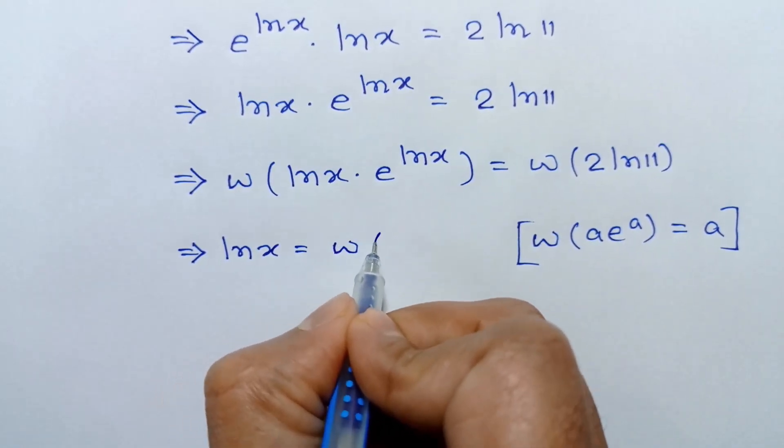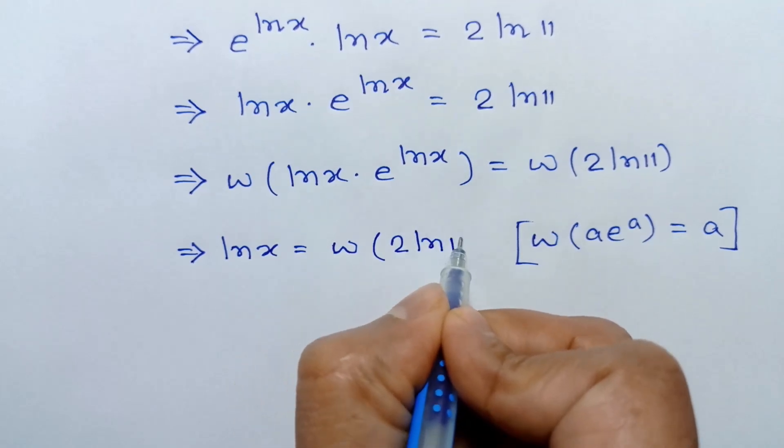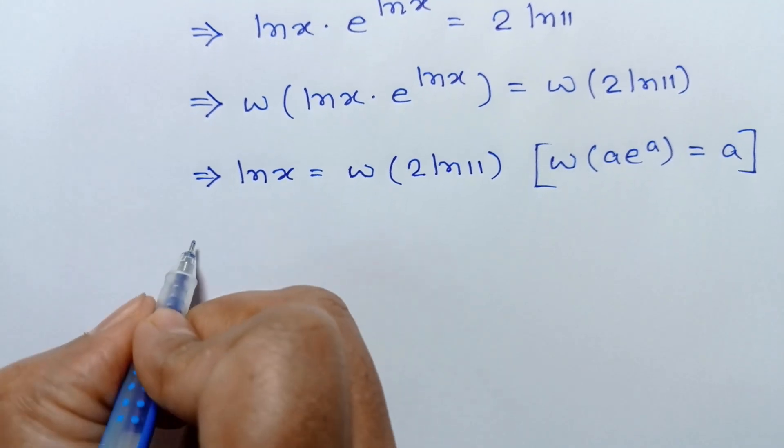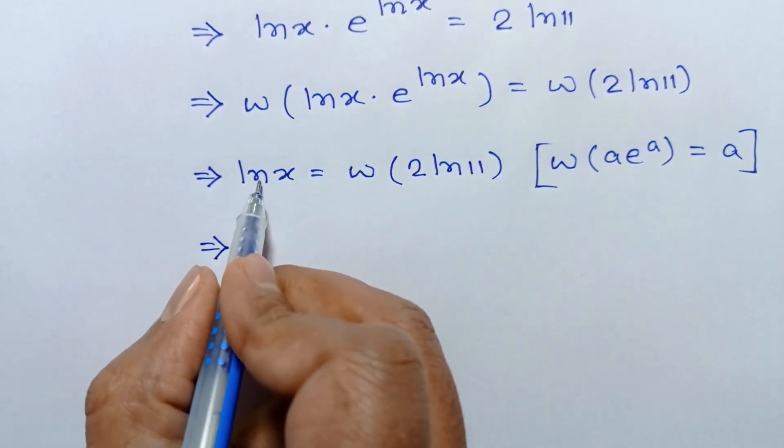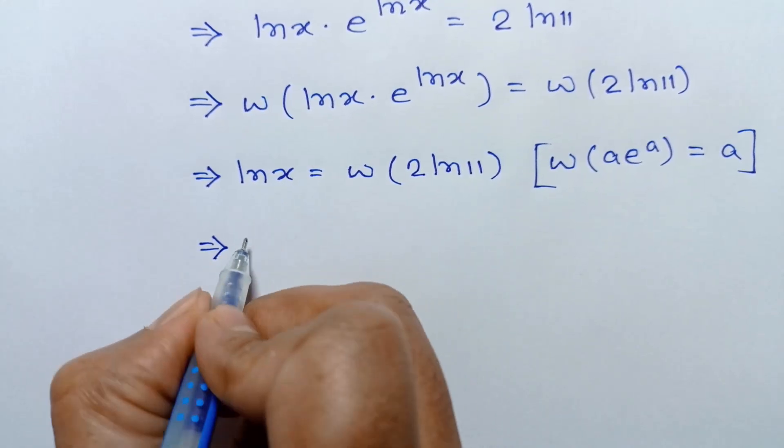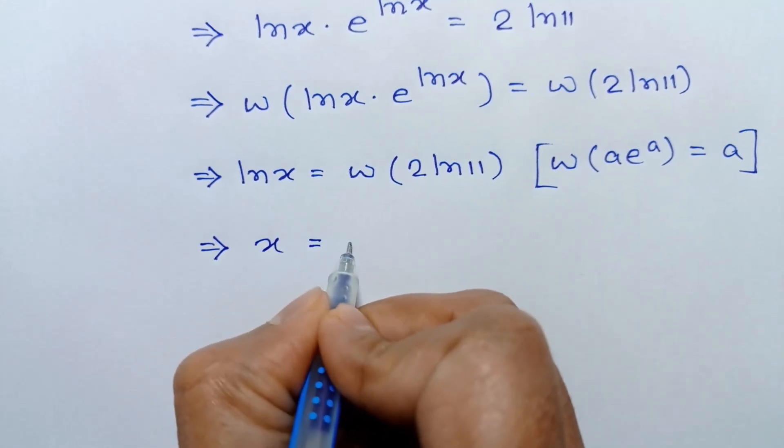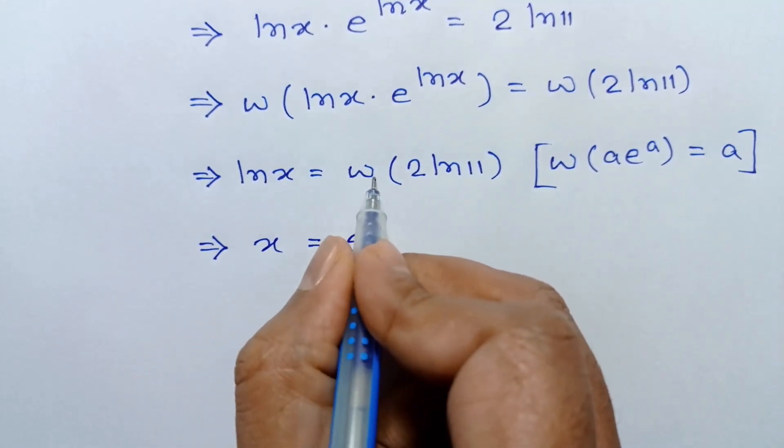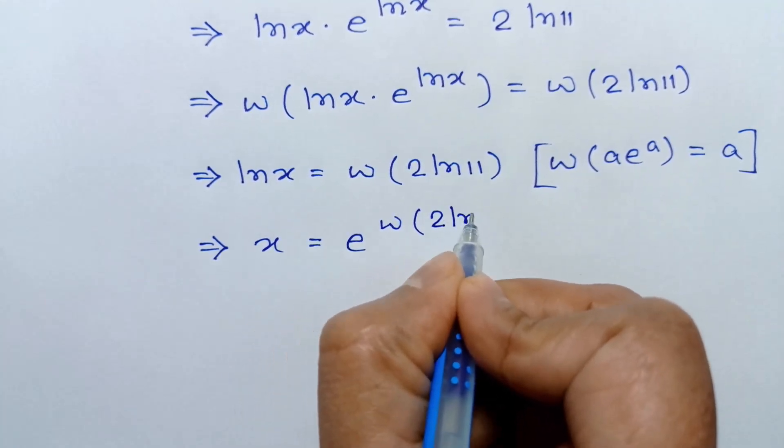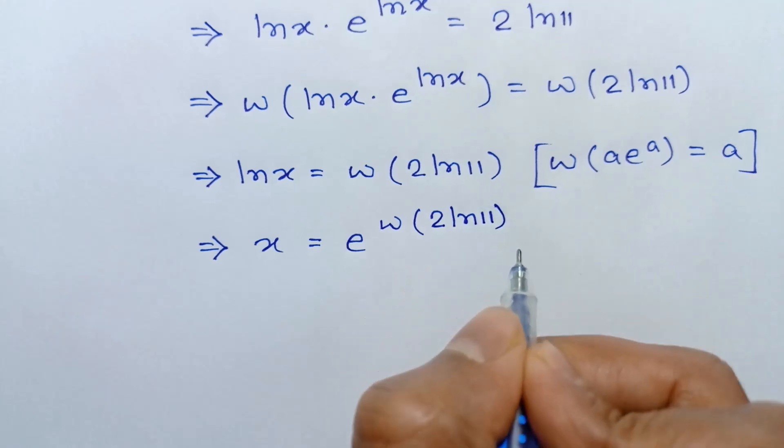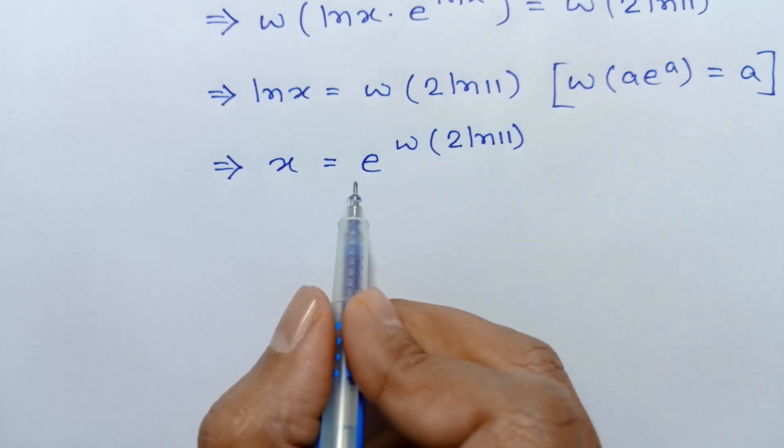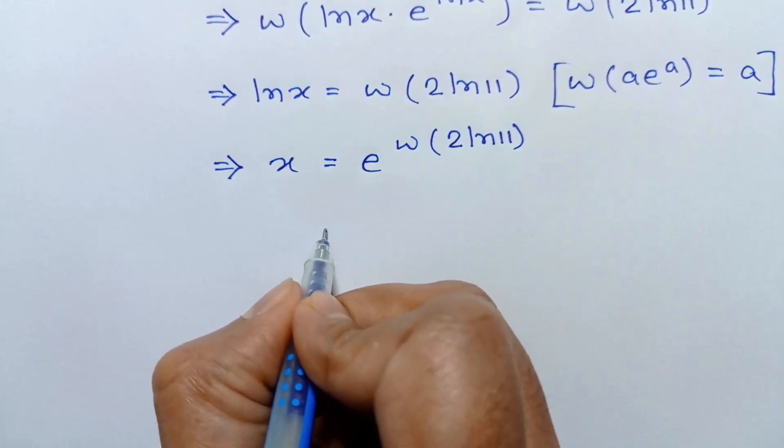So x equals e to the power W of 2 ln 11. This is the value of x. Now if we find the approximate value of x...